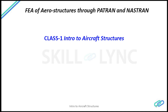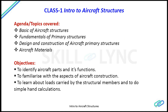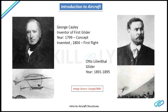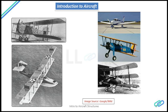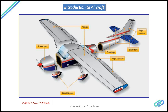Hello friends, welcome back to my lecture on introduction to aircraft structures. We are still in class one of the course on aero structures. So far I have been talking about the various different components of the aircraft and we have classified those components identified as primary and secondary structures. In this session I am going to continue speaking on the design and construction aspect of the primary components of the aircraft — wings, fuselage, landing gear, and power plants.